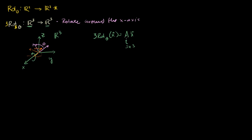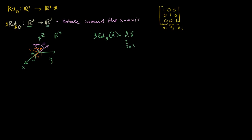In the last video, we learned that to figure this out, you just have to apply the transformation to the identity matrix. So we start off with the identity matrix in R3, which is a 3 by 3 matrix with 1s on the diagonal and 0s elsewhere. Each of these columns are the basis vectors for R3: E1, E2, E3. What we need to do is apply the transformation to each of these basis vectors.